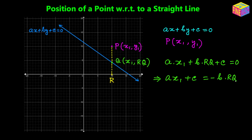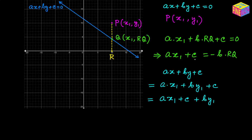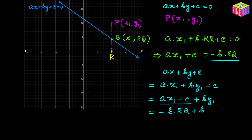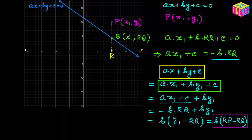Now let's use the coordinates of P in the expression ax plus by plus c. Substituting P's coordinates, it becomes a times x₁ plus b times y₁ plus c. We can rearrange this as: (a times x₁ plus c) plus b times y₁. Since a times x₁ plus c equals negative b times RQ, this becomes negative b times RQ plus b times y₁, which equals b times (y₁ minus RQ), or b times (RP minus RQ).